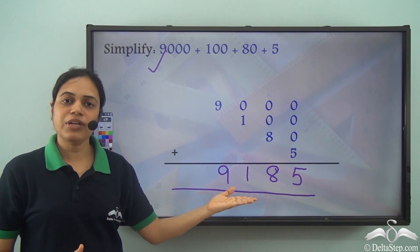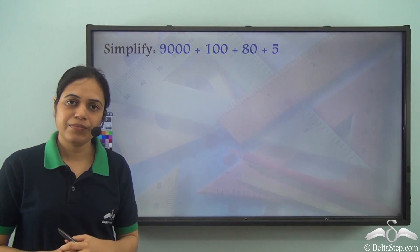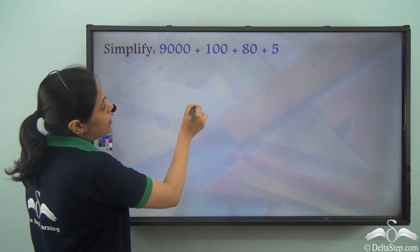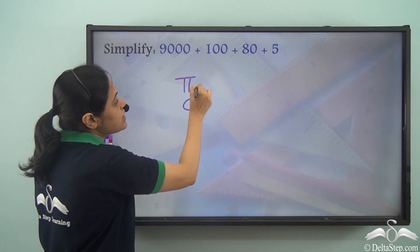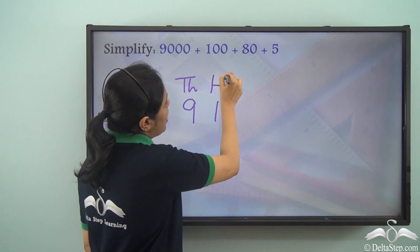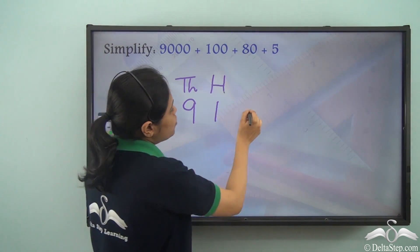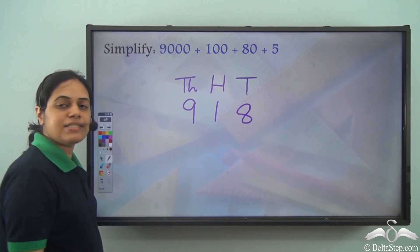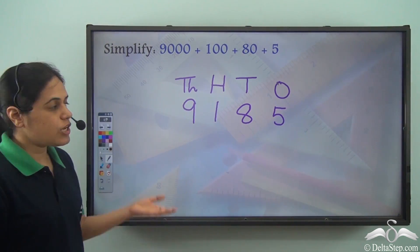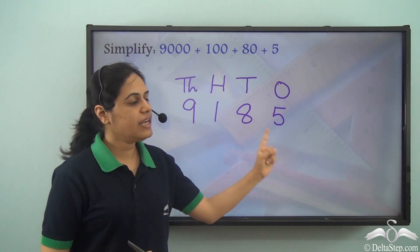But even without adding, we can get this number. I have nine thousand, one hundred, eighty, and five. Nine thousand means there are nine thousands, so nine is in the thousands place. One hundred means one is in the hundreds place. Eighty means eight tens, so eight is in the tens place. And five means five ones, so five is in the ones place. So simply by looking at the expanded form, I can get the number — nine one eight five.